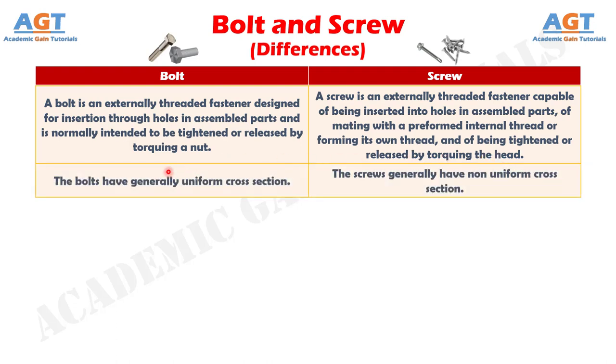Number 2: Bolts generally have a uniform cross-section, whereas screws generally have a non-uniform cross-section.